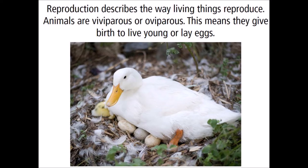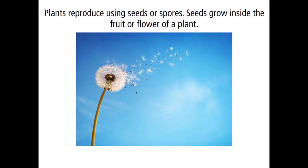Reproduction describes the way living things reproduce. Animals are viviparous or oviparous — this means they give birth to live young or lay eggs. Plants reproduce using seeds or spores. Seeds grow inside the fruit or flower of a plant.